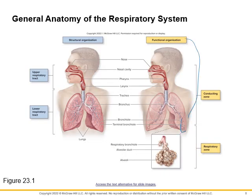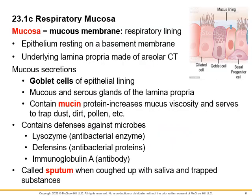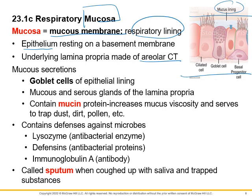So functionally, it's about gas exchange; structurally, it's which structures make up which tract. The respiratory mucosa is the lining of the respiratory system — there's epithelium and underlying connective tissue. We can see the mucous lining and the different types of epithelia. Some cells are ciliated, and some are goblet cells. Goblet cells help produce mucin, mucus.